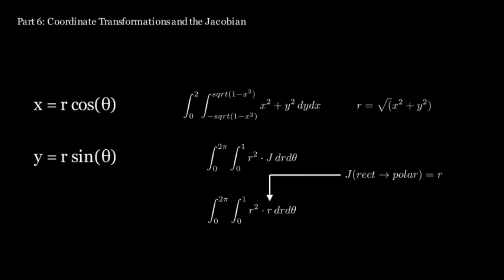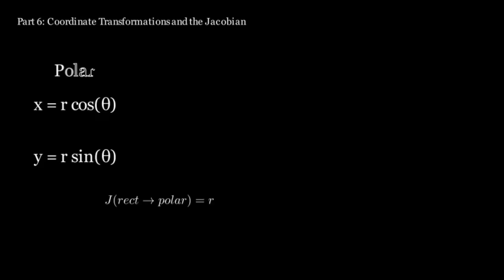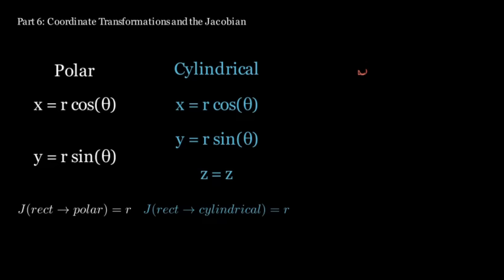What I just said is basically an oversimplification of the reason behind the Jacobian, and the real reason involves a ton of cool math with matrices where the Jacobian is a determinant, but that could be an entire video of its own. Anyways, here are the transformations needed to convert to polar, cylindrical, and spherical coordinates.